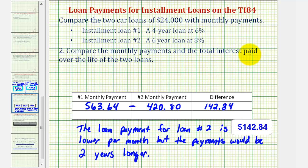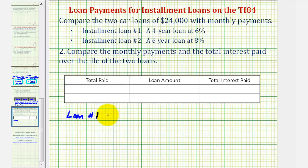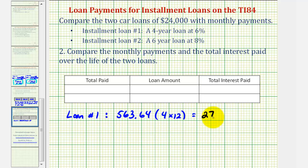Now let's compare the total interest paid over the life of the two loans. To do this, we'll find the total amount paid and then subtract the loan amount to determine the total interest paid. For loan one, the total amount paid is the monthly payment times the number of months over four years — $563.64 times 48, which comes out to $27,054.72. This is the total amount paid over the life of loan one.